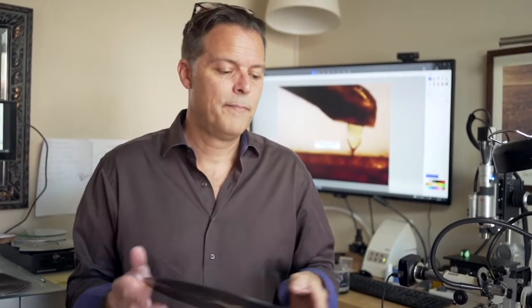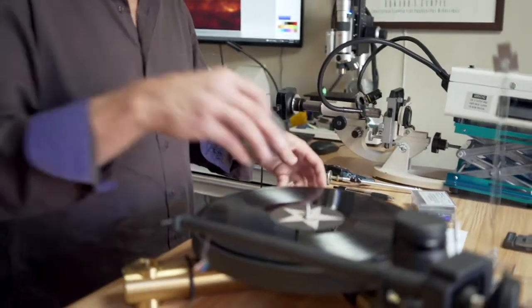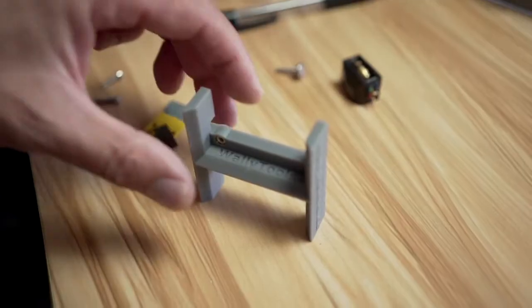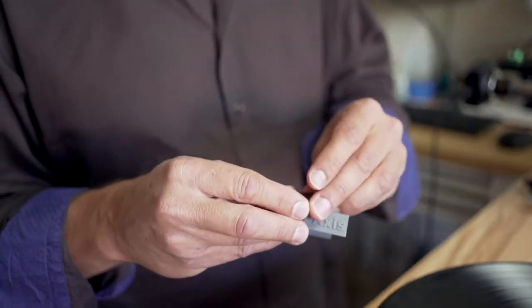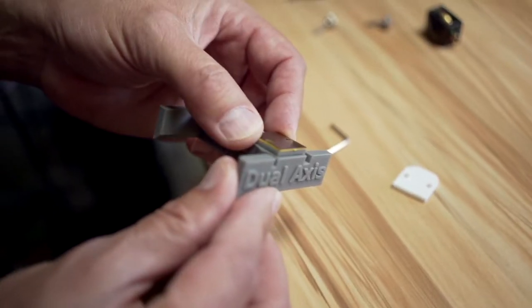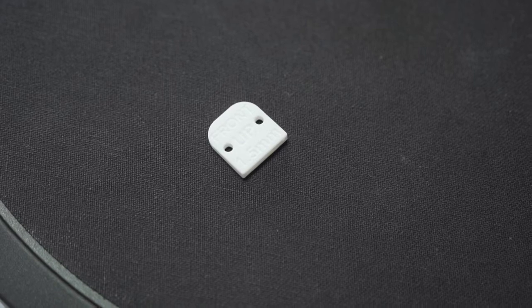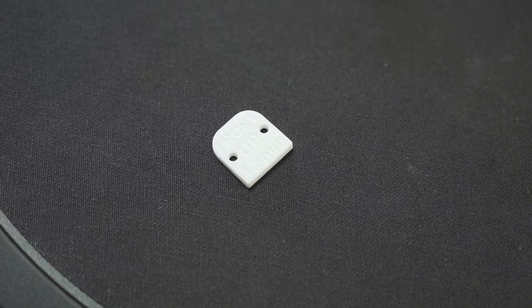So the first step is to make sure that the underside of the head shell is perfectly level to the surface of the record, and let's do that by putting on a sacrificial record, and then install your dual-axis Wally reference with the appropriate number of shims to equal the height of your cartridge plus the height of the corrective shim itself.